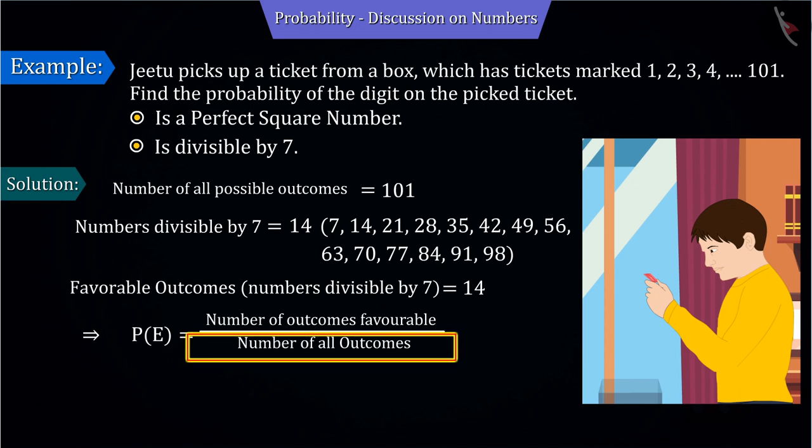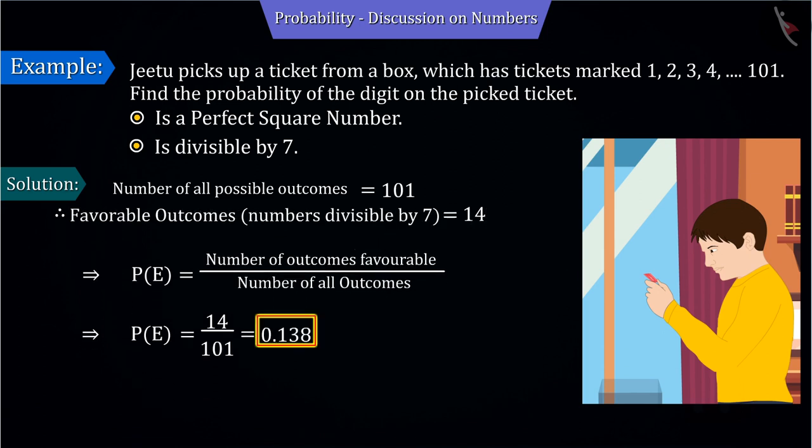Substituting the values of the total possible outcome and the outcome favourable to the event in the probability formula, and by solving, the probability of getting the number divisible by 7 is 0.138.